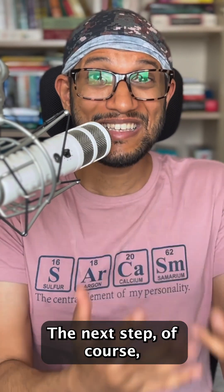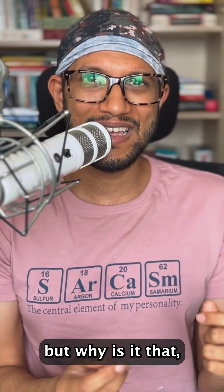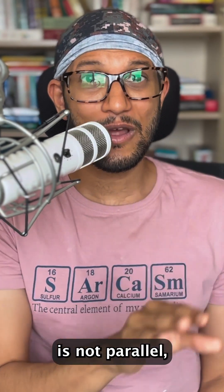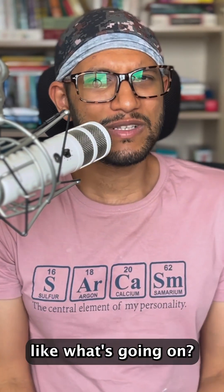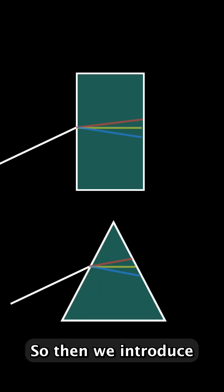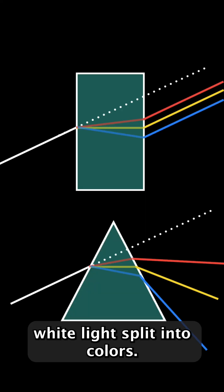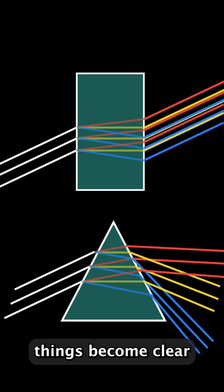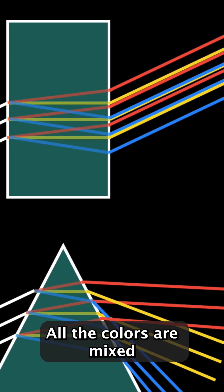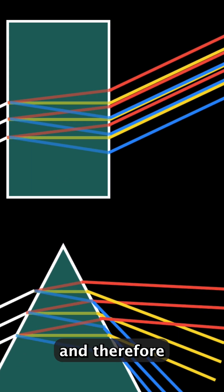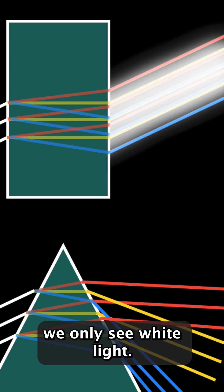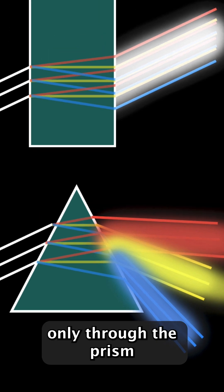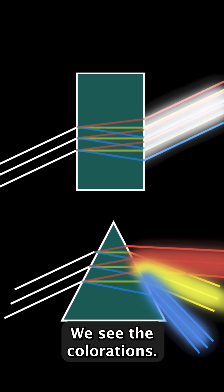But we are not done. Kids then ask: why is it that if the emergent ray is parallel we see no colorations, but if the emergent ray is not parallel we do see colorations? Where do the colorations come from? So then we introduce the idea of dispersion — white light splits into colors. Finally, when we draw multiple rays of light, things become clear: for the rectangular middle part of the scale, all the colors mix together and we see only white light, whereas for the prism part the colors separate out, and that's why through the edge of the scale we see colorations.